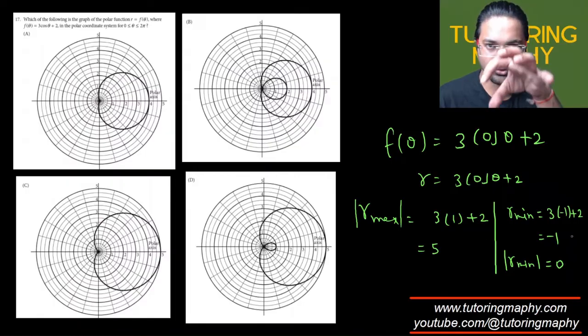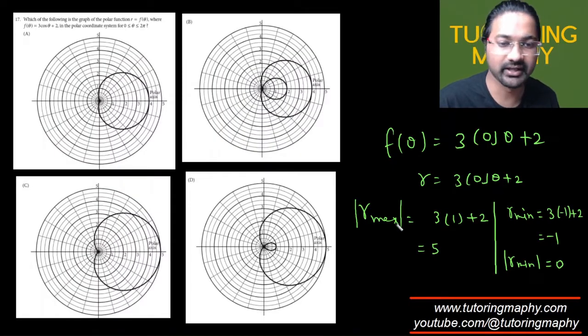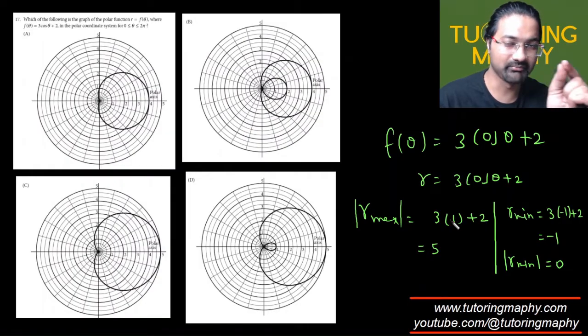The minimum of absolute value must be 0. This is a really important concept. You should know it if you don't already: finding the absolute value of r gives you the minimum and maximum distance from the center or the pole.